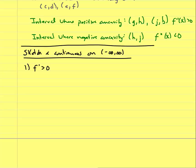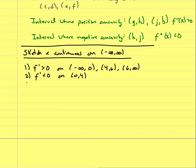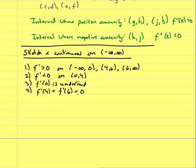The conditions are: the first derivative is positive on (negative infinity, 0), (4, 6), and (6, infinity); the first derivative is negative on (0, 4); f prime of 0 is undefined; and f prime of 4 and f prime of 6 are equal to zero. So x = 4 and x = 6 are critical numbers, and since f prime of 0 is undefined yet the function is continuous, x = 0 must be a cusp or corner.